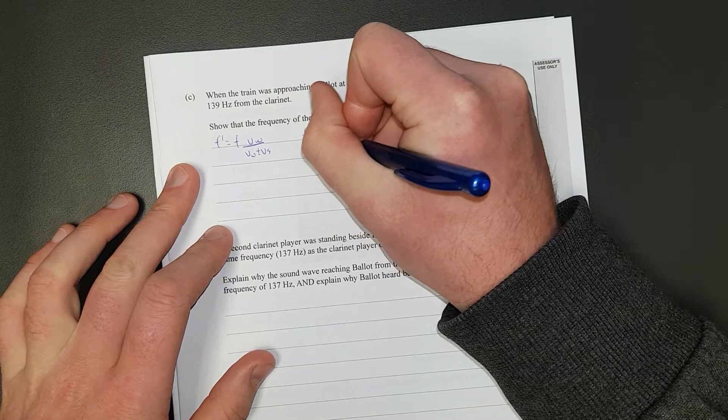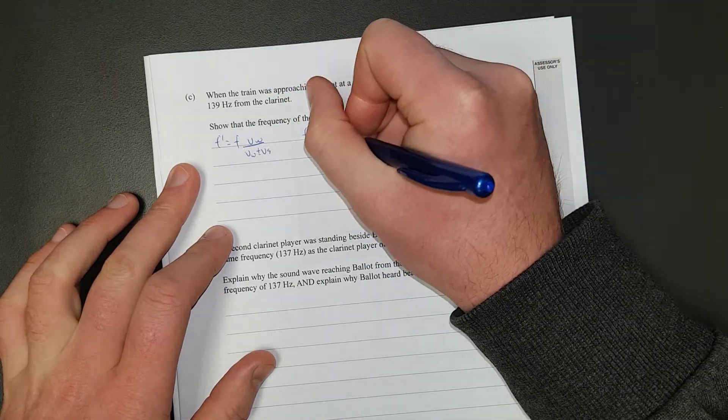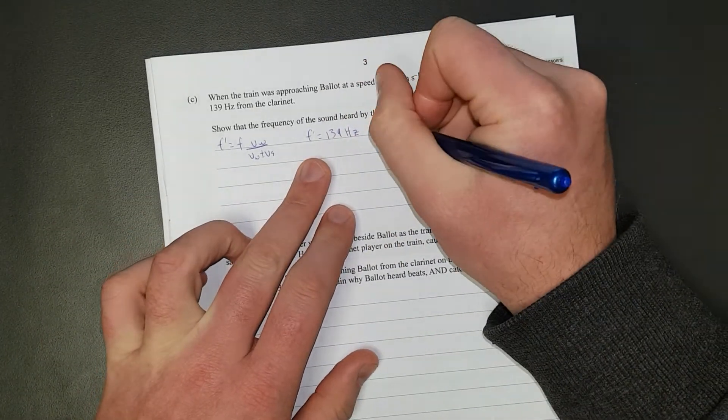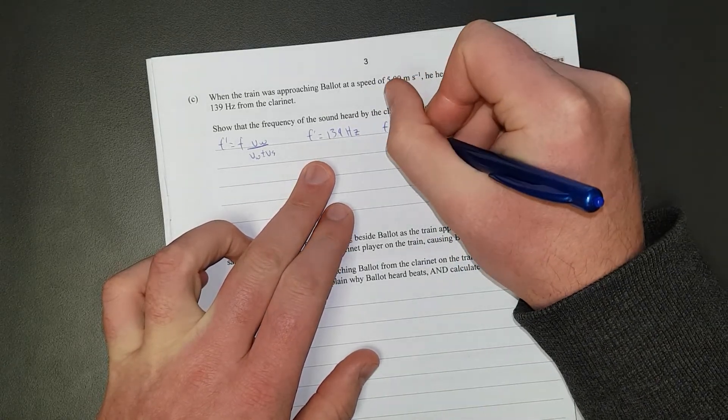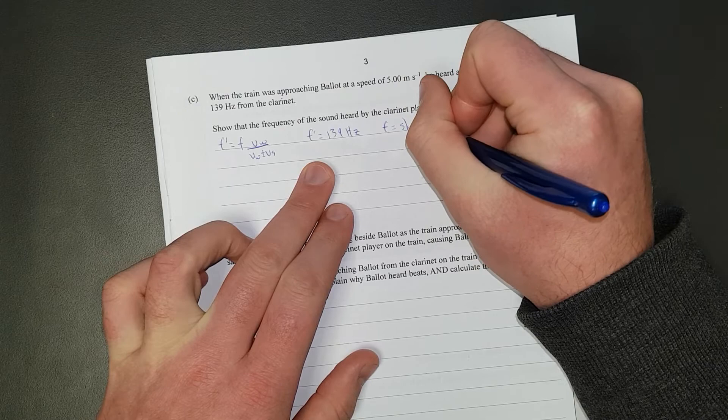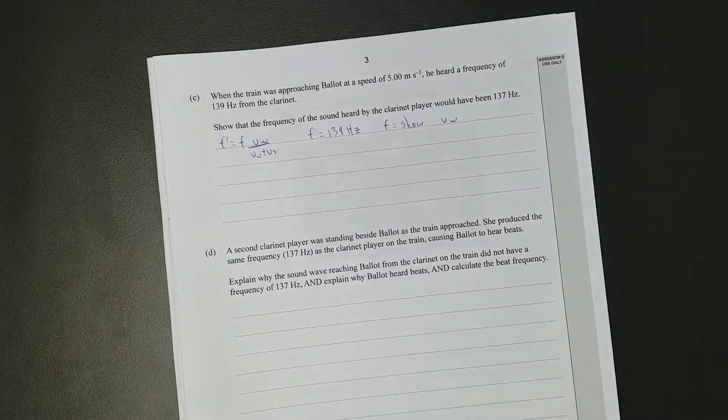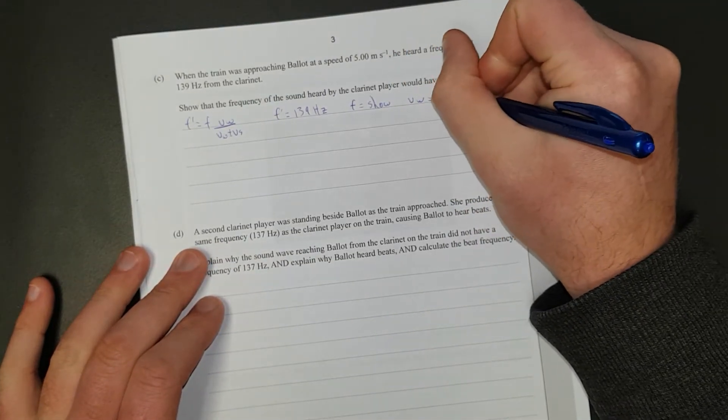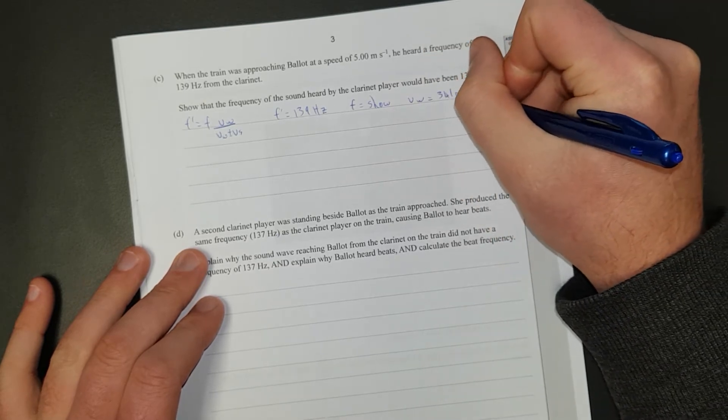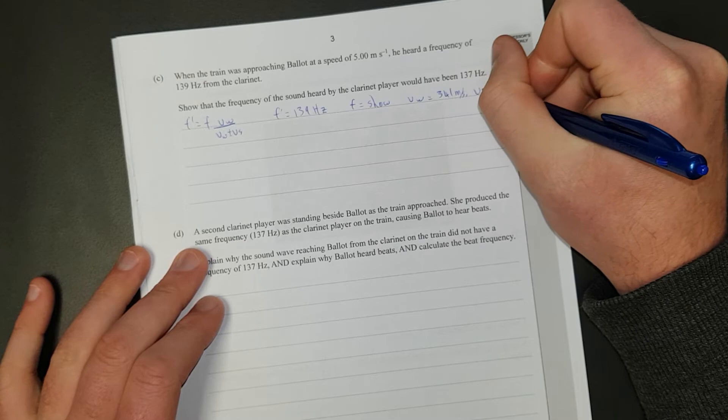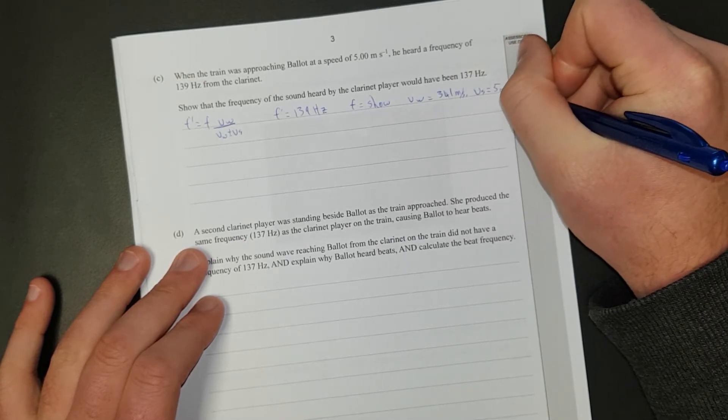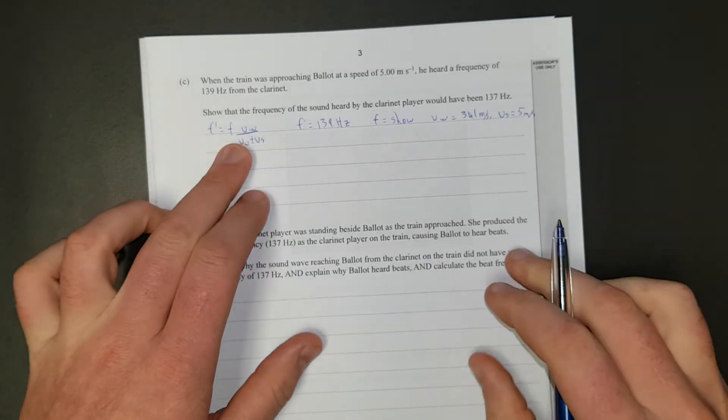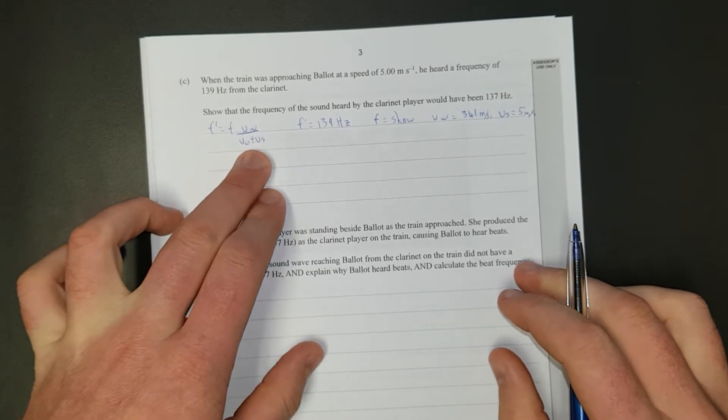Let's just write out F prime is equal to 139 hertz, because that is the observed, the heard frequency. F is what we're going to find. So we're going to show, I'll just write show. V wave, the velocity of the wave is 341. Velocity of the wave is 341. And the source, put meters per second. And V source is equal to 5 meters per second. I'm just leaving out the significant figures just because it's running out of space. So what I want to do is I want to rearrange, or first, I want to figure out whether it needs to be plus or minus.